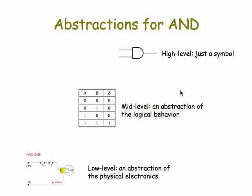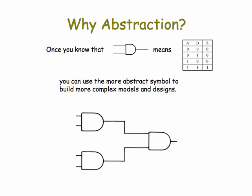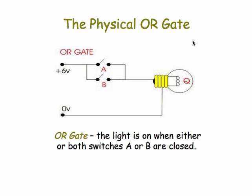And we can look at now the abstractions for the AND gate as three different levels of abstractions. At the low level, we have the physical circuit, represented by voltages and transistors and switches. At the mid-level, we can view that more abstractly as a truth table function, which defines the output given every possible input. At the highest level, we can dispense with the details and simply refer to an AND gate by its symbol. Why would we want to do that? Well, once you know that this symbol means what's expressed in this table, you know the definition of an AND gate. You don't need to write it down when you're designing more complex models and more complex designs.